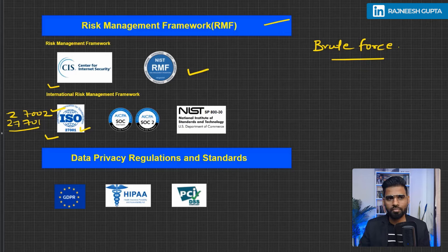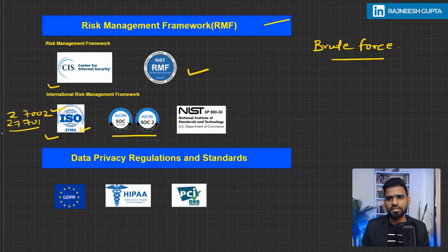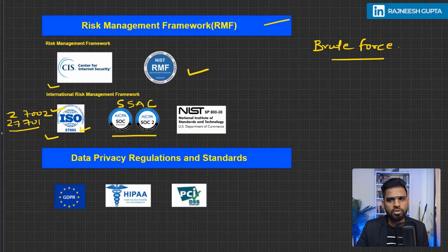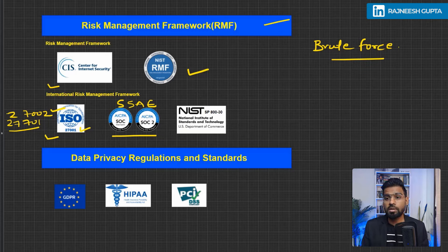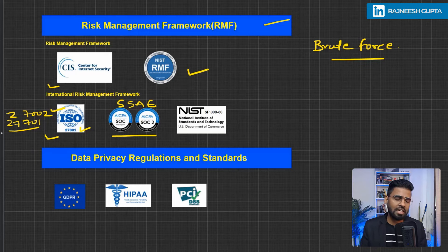Moving to the second compliance: SOC 2. This is more about internal audits. It falls under SSAE — the Standards for Attestation Engagement — and covers System and Organization Controls. This carries the SOC 1 and SOC 2 compliances, which are majorly for financial statement integrity.